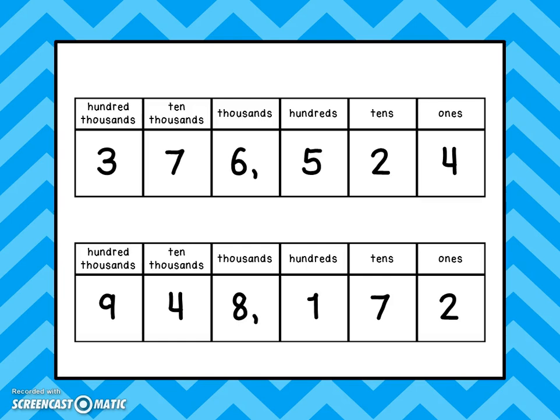In the ten thousands place we have four groups — that's four groups of ten thousand, or forty thousand. And we have a nine in the hundred thousands place, or nine groups of one hundred thousand.